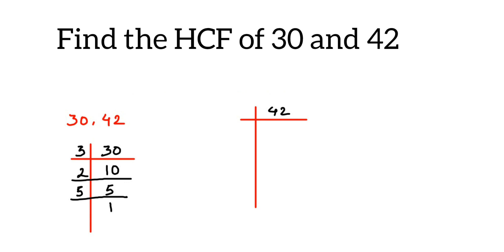Next we have 42. 42 goes into 2, so 2 into 42 is 21, and 2 into 2 is 1. Then 21 goes into 3, so 3 into 21 is 7. And 7 is a prime number, so 7 into 7 is 1.